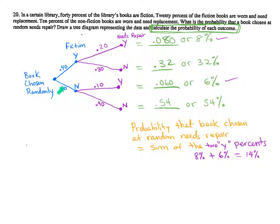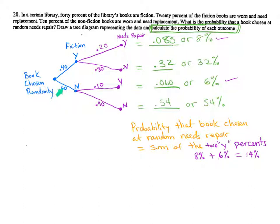So this is what a tree diagram looks like. We are selecting a randomly chosen book, so we start here with our first dot. That first dot represents a randomly chosen book, and the probability that it is fiction — 40% of the library's books are fiction — so this segment would be 0.40. That's the probability a randomly chosen book will be fiction. Now if that's 40% fiction, then it'll be 60% not fiction, because 40 plus 60 gives you 100%.